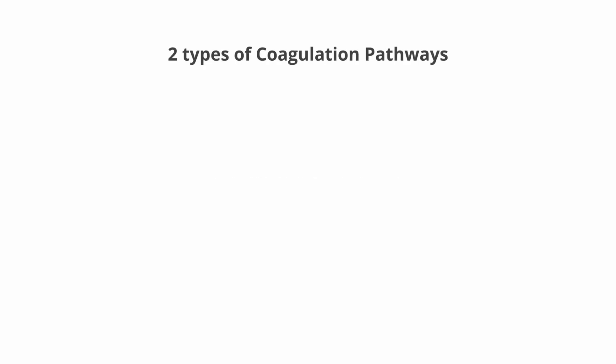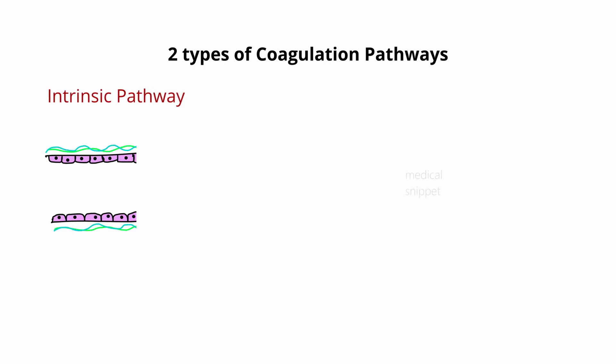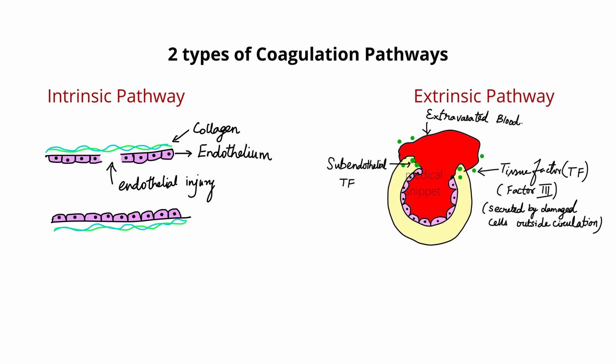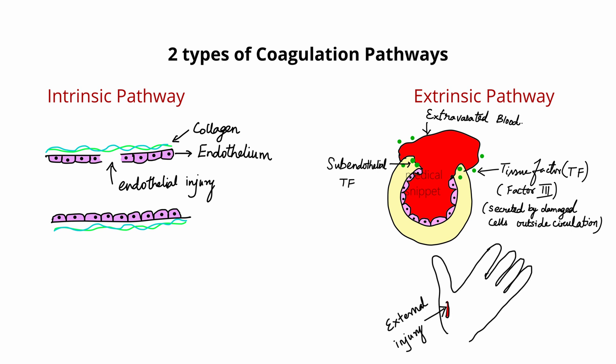There are two types of coagulation pathways. One is the intrinsic pathway, which is activated by the exposed endothelial collagen after internal damage to the vessel wall. Another is the extrinsic pathway, which is activated via the subendothelial tissue factor after external trauma, which causes blood to escape the circulation.